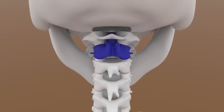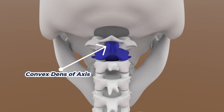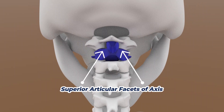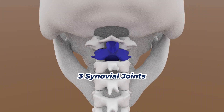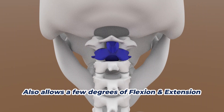On the other hand, your atlanto-axial or AA joint is formed by the convex dens and the concave median articulation of the atlas, as well as the superior articular facets of the axis and the inferior articular facets of the atlas. It consists of three synovial joints, which allows primarily rotation and lateral flexion as well as a few degrees of flexion and extension.